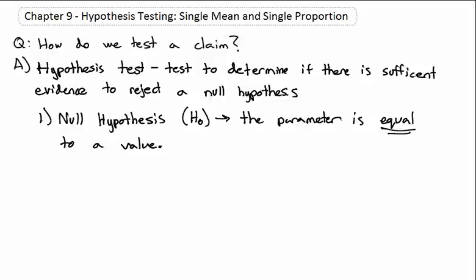The teacher is always right. So the null hypothesis — the parameter will always be equal to a value, like mu equals 7. We will assume that is true unless we find sufficient evidence to reject the null hypothesis in favor of what we call the alternative hypothesis.